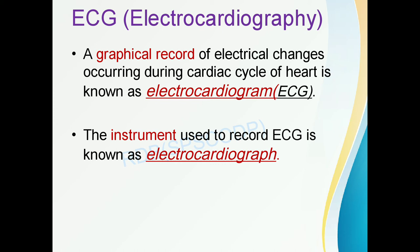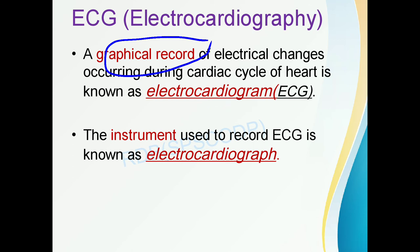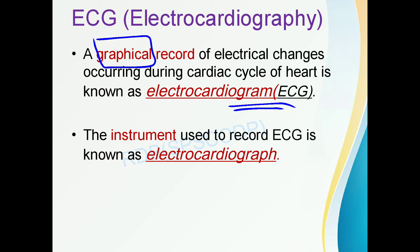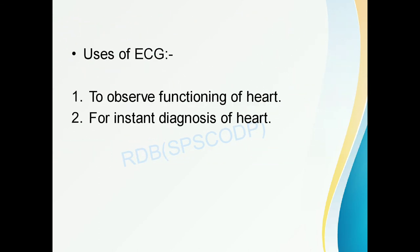The next hospital equipment is the ECG, that is electrocardiography. It is a graphical record of electrical changes occurring during the cardiac cycle of the heart. The instrument used to record the ECG is known as an electrocardiograph, and it is used to observe the functioning of the heart and for instant diagnosis of heart disorders.